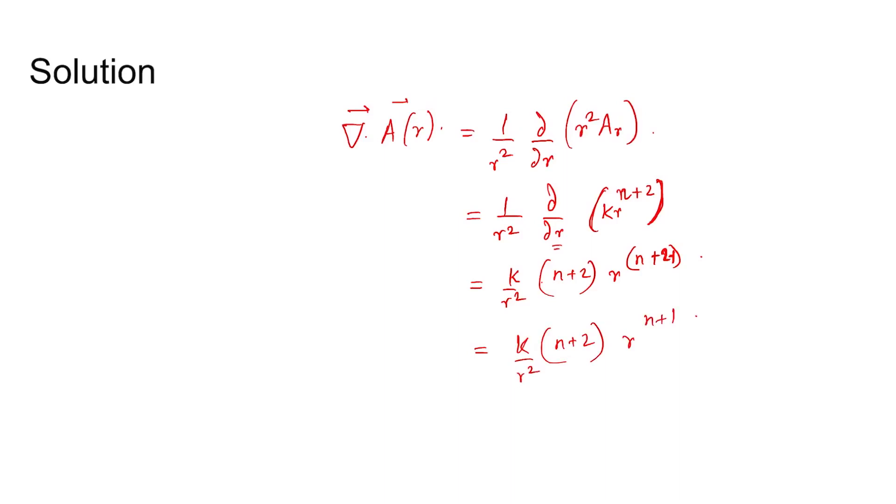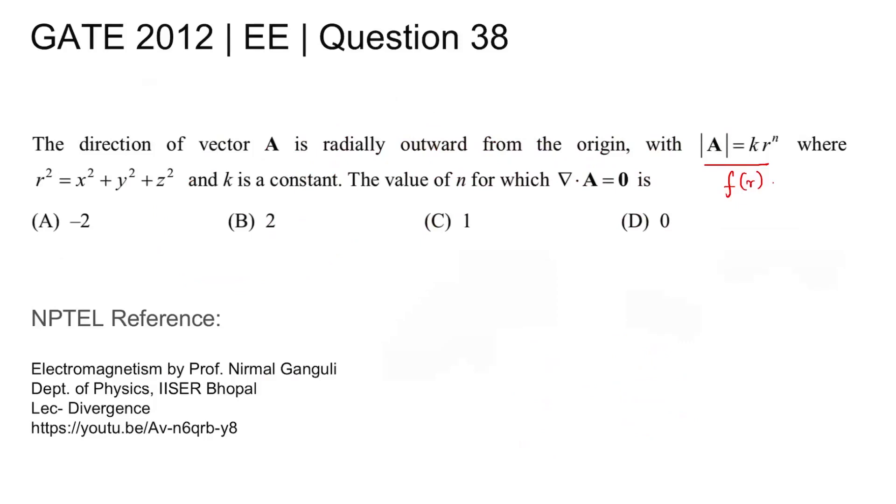In the given problem, divergence of A should be 0. Since k is non-zero and r is not equal to 0, n plus 2 must equal 0 for divergence to be 0. Therefore, n equals minus 2. So in the given problem, the value of n for which divergence is 0 is n equals minus 2, making option A the correct option.